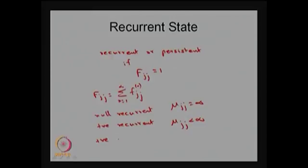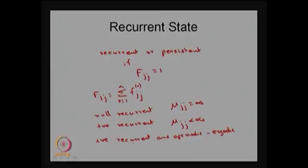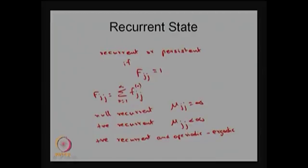If any state is positive recurrent as well as aperiodic, then that state is called an ergodic state. A state is called ergodic whenever it is positive recurrent as well as aperiodic. Aperiodic means the periodicity of that recurrent state is one — that is, the greatest common divisor of all possible steps in which the system returns to the same state is one. If the period is one and the state is positive recurrent, meaning the mean recurrent time is a finite quantity, then it is called an ergodic state.